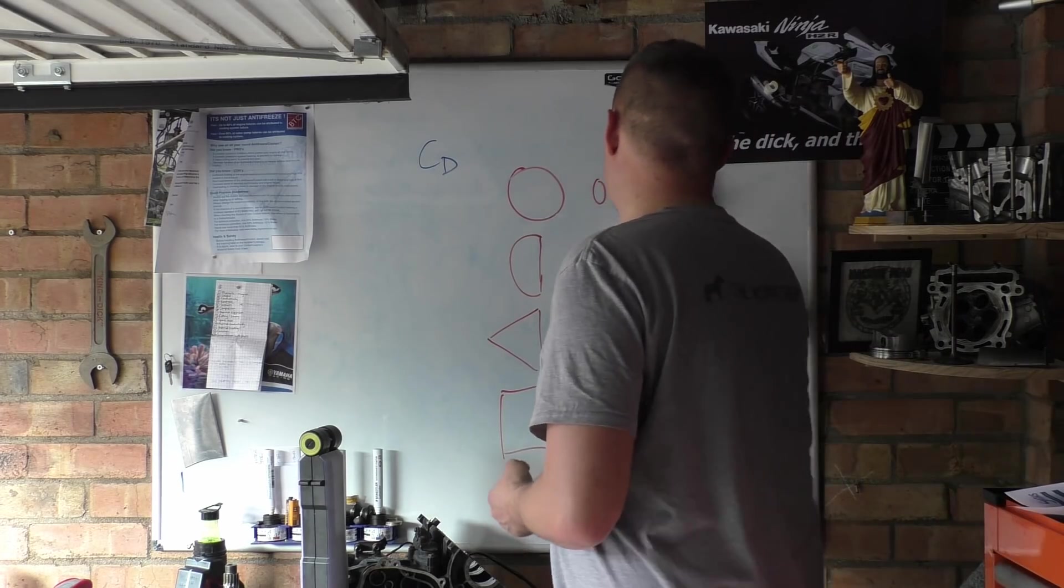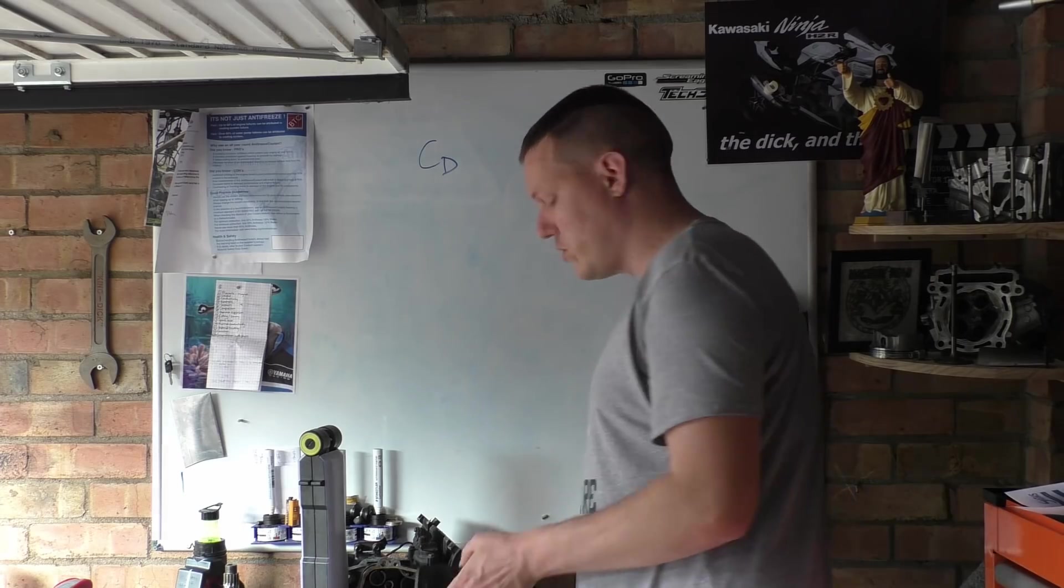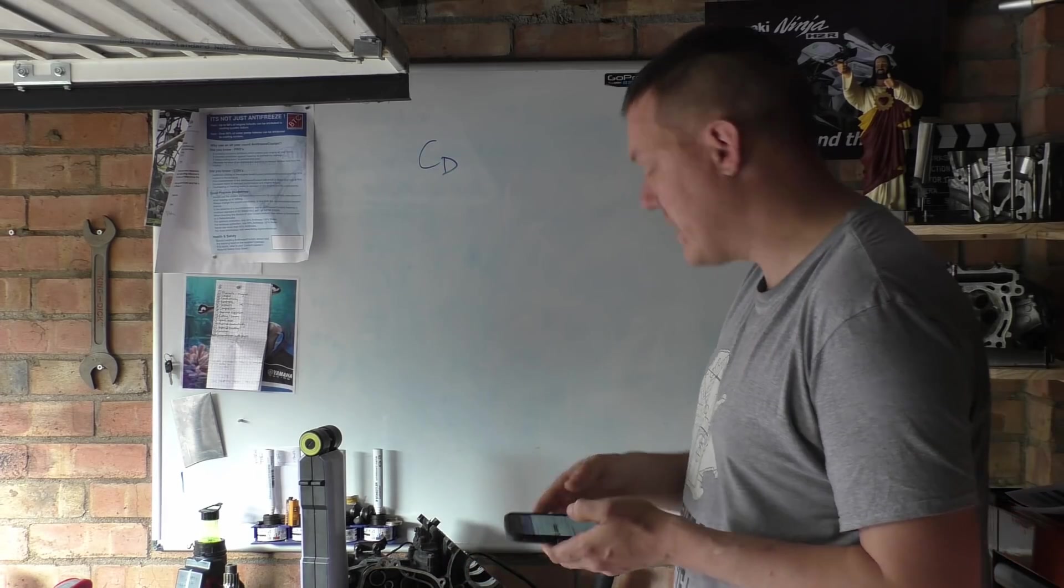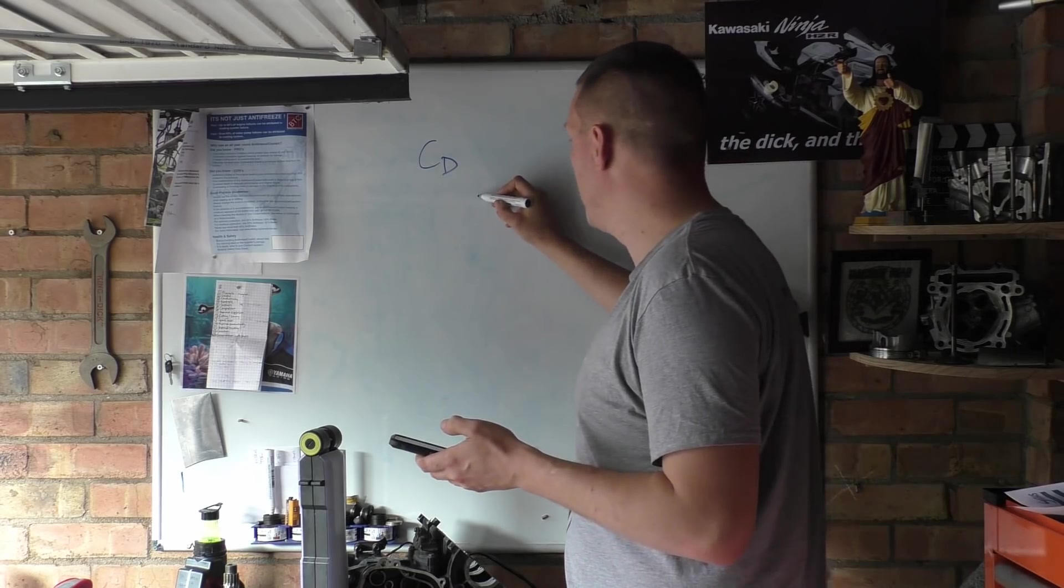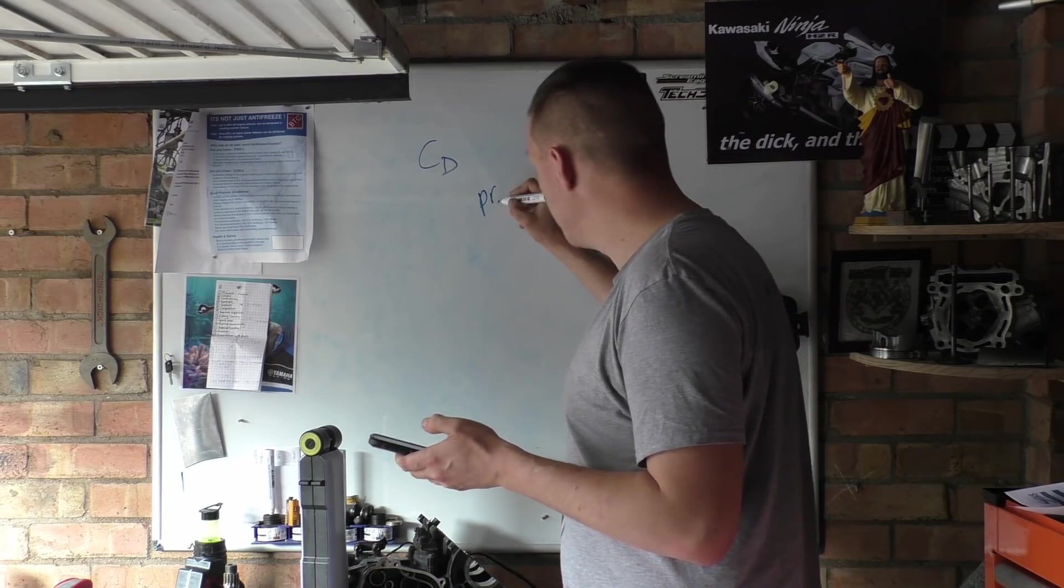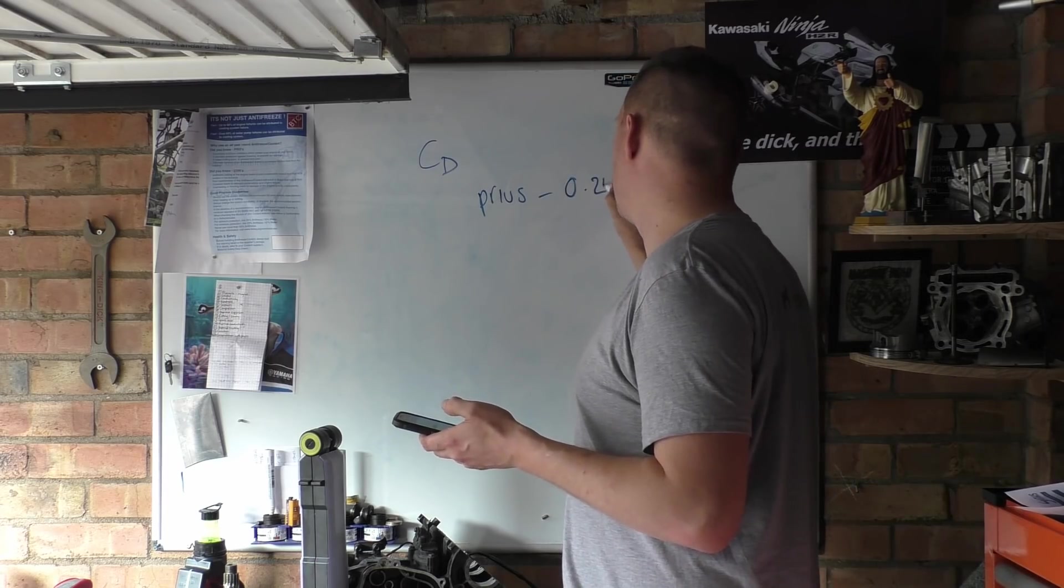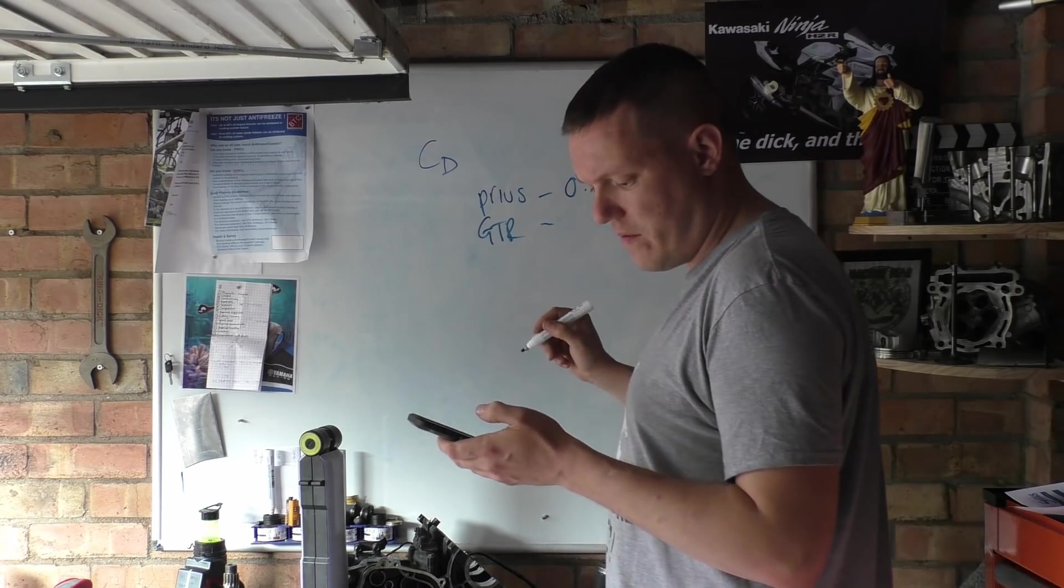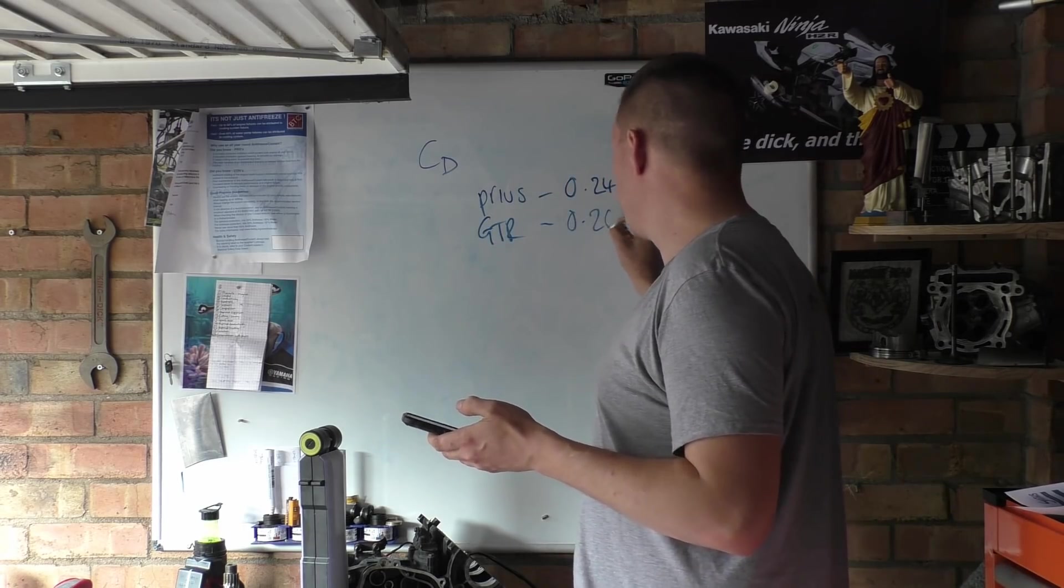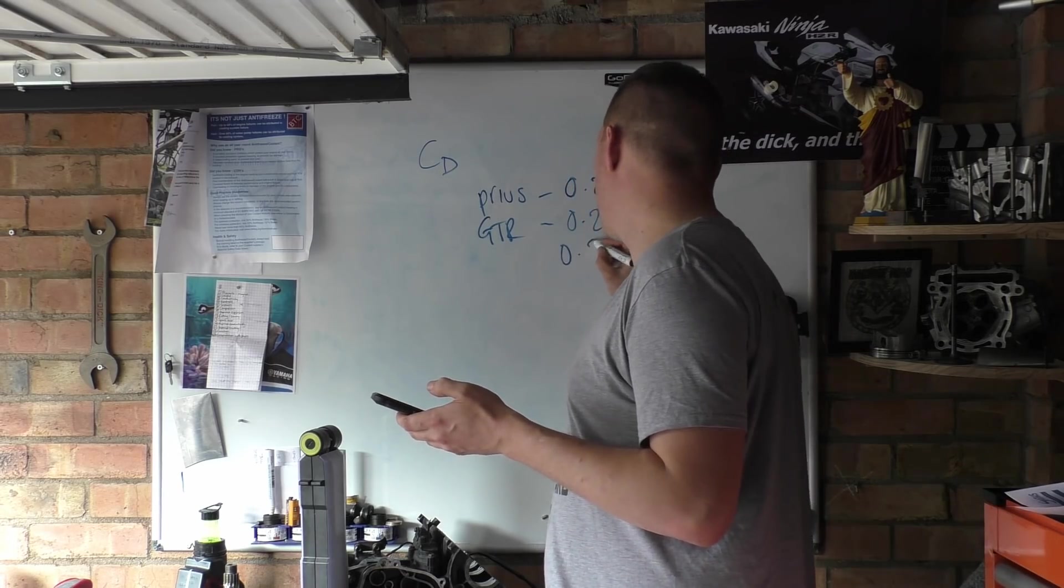If you look at the coefficient of drag numbers for some cars, certain cars will have coefficient of drag like a Toyota Prius is 0.24, a GTR is 0.26, and even a Ford Transit is 0.37.